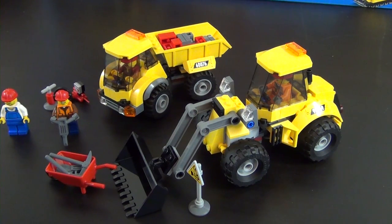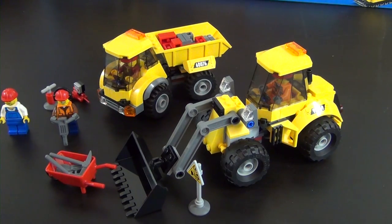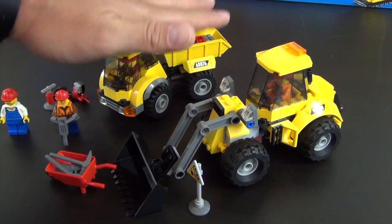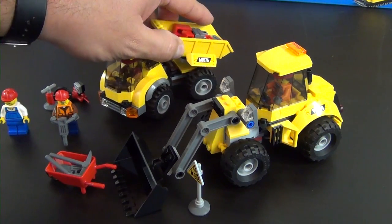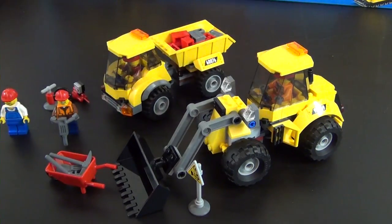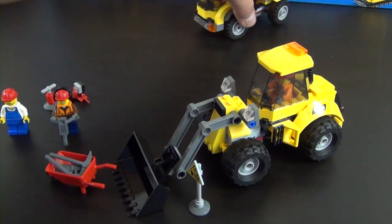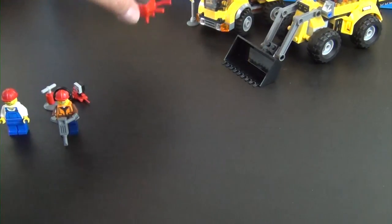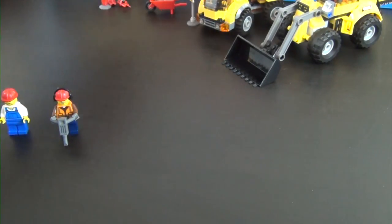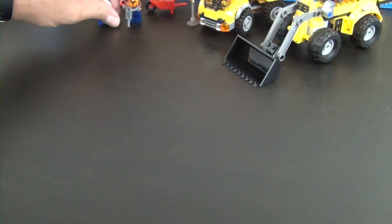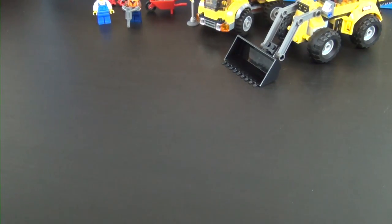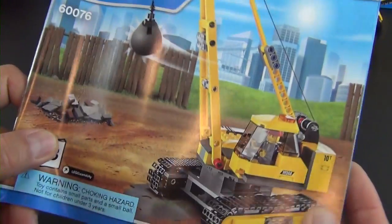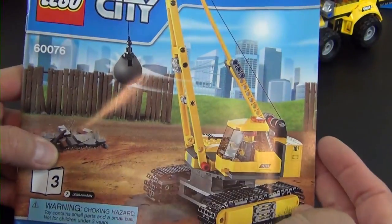Hey everyone, welcome back to the Hidden Brick where today we're doing part two of the build of the LEGO City Demolition Site. This is how far we made it in part one - we built a tipper truck, dump truck, and then a front-end loader as well as some accessory pieces for the demolition site. Right now we're moving on to our third instruction book and this is basically going to be the demolition crane.